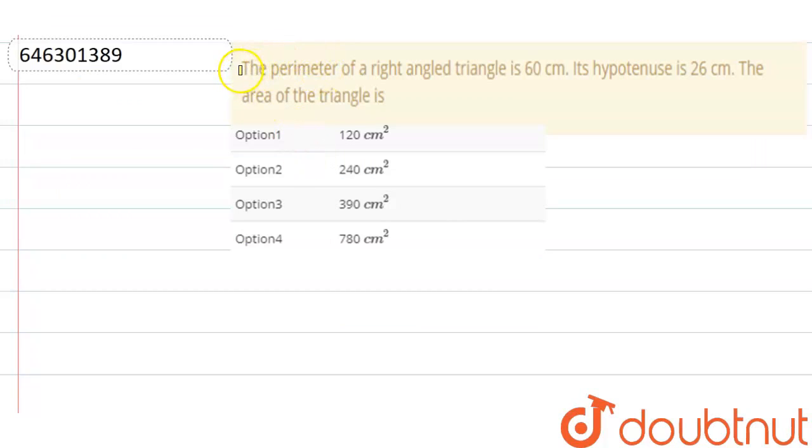Hello everyone. So our question is: the perimeter of a right angle triangle is 60 cm. Its hypotenuse is 26 cm. The area of the triangle is what?